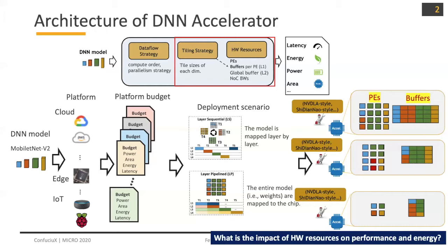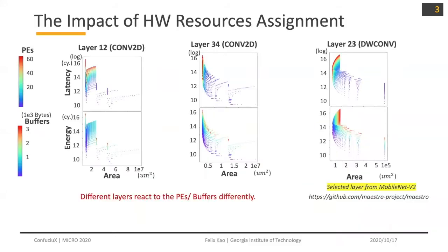What is the impact of hardware resource on performance and energy? Looking at some layers of MobileNet V2, given the same mapping strategy which is BDOA, we give them different PE and buffer assignments and plot their latency, energy, and area performance. You can see that different layers react to the PE and buffer assignment very differently, so finding the optimal PE buffer assignment for each layer becomes crucial.